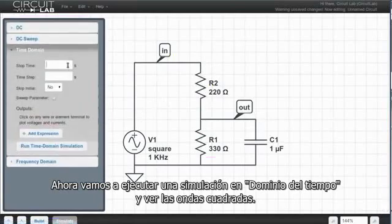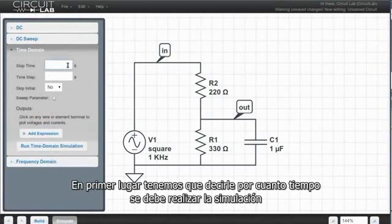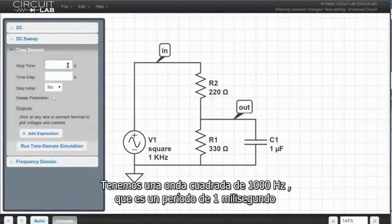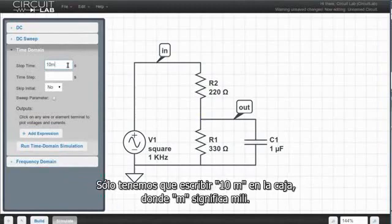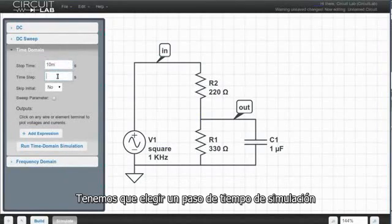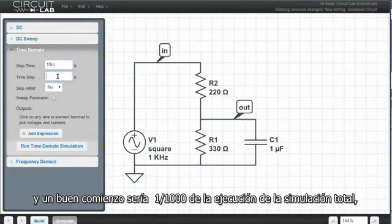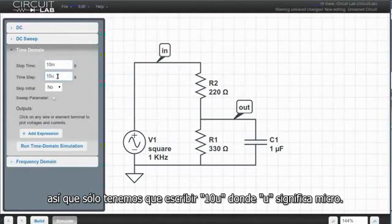Now let's run a time simulation and see the square waves. First we've got to tell it how long to run a simulation for. We had a 1000 Hz square wave, which is a 1 ms period, so let's simulate for 10 ms so we can see several cycles. Just type 10m into the box, and it knows that little m means milli. We have to pick a simulation time step, and a good start would be to simulate for 1 1,000 of the total simulation run, so just type 10u with u for micro.